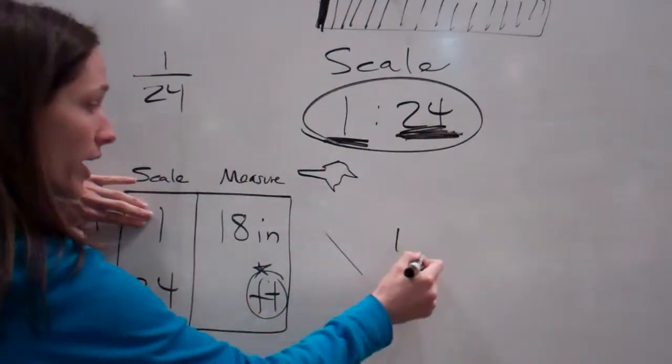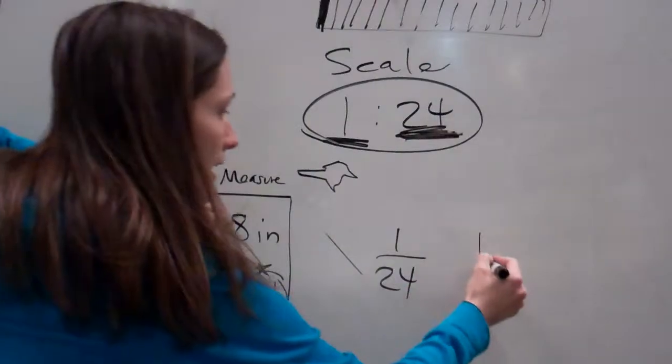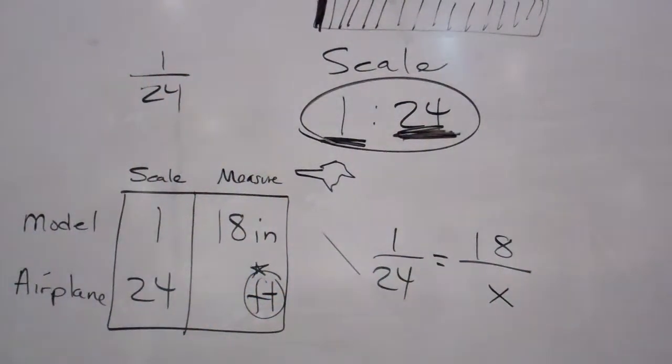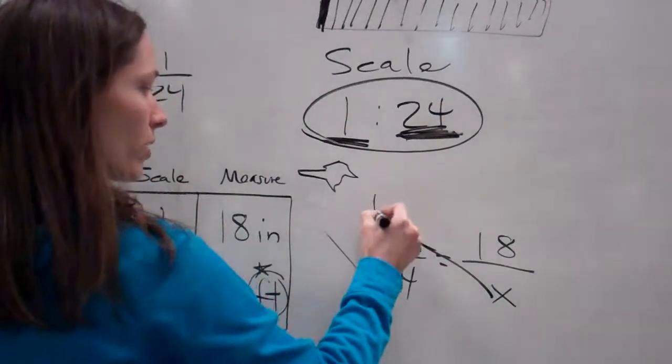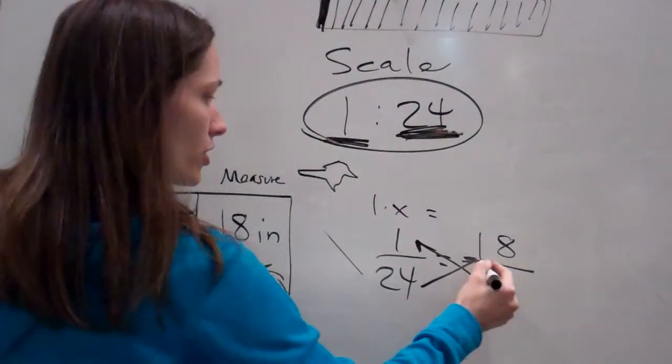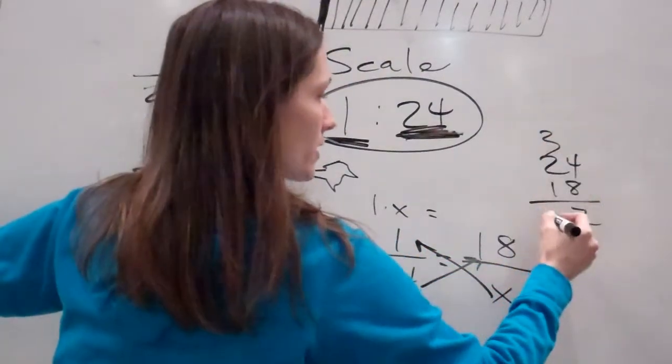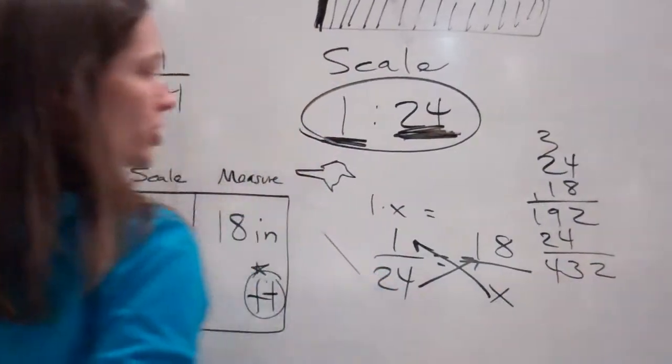So, what you're going to do is go 1 over 24, just like we always do, 18 over x. 1 over 24, 18 over x. And then we'll just work it. 1 times x equals 24 times 18 is 432.